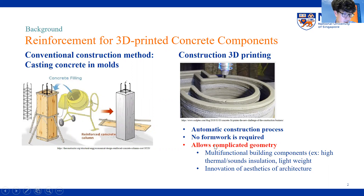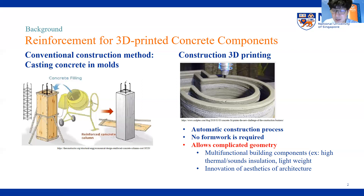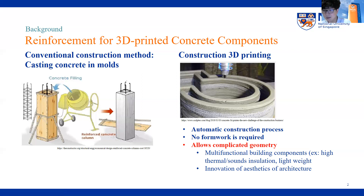What's more, the nozzle is held by either a robotic arm or gantry system, so the nozzle, when extruding concrete, is moving along a customized preset print path. This allows us to fabricate building components with complicated geometry that is customized based on our design.